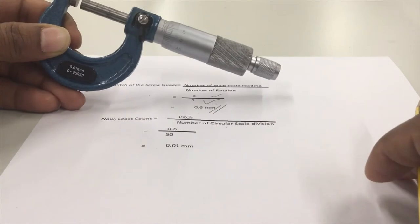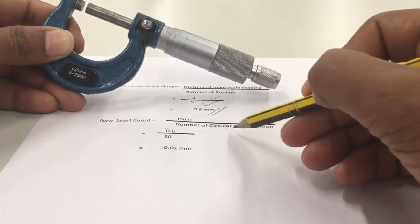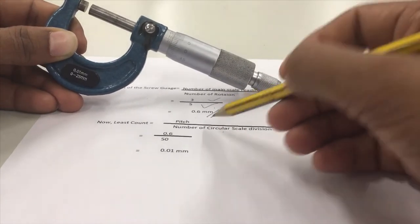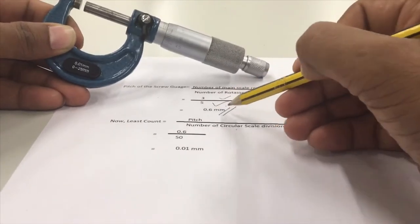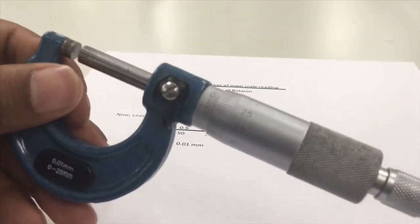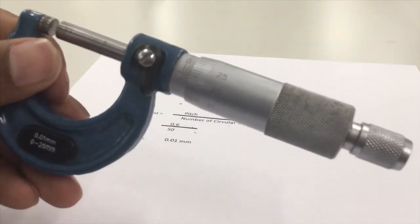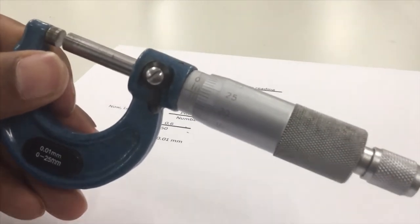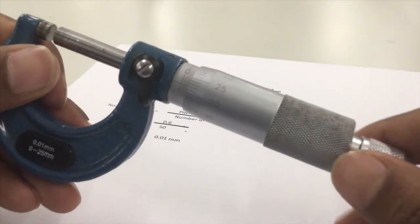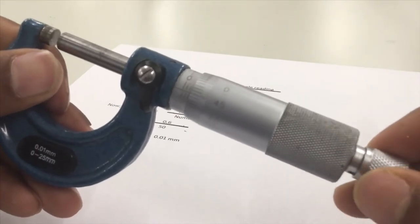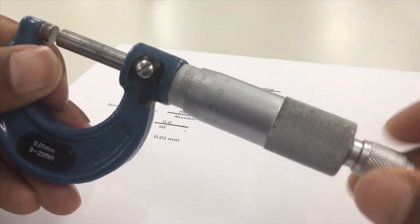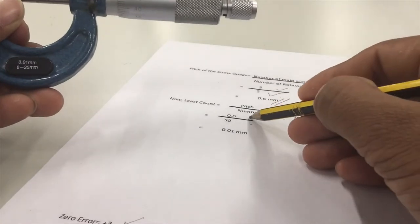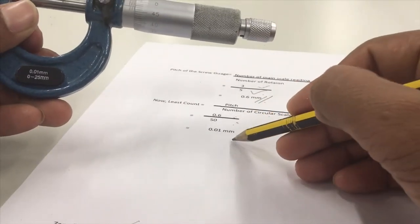Now to find the least count, we will require pitch by the number of circular scale divisions. So the pitch we got is 0.6 by, let's see how many circular divisions are here. It has 35, 40, 45 and then 0 comes. So 50, which is 0.6 by 50, that will be 0.01.